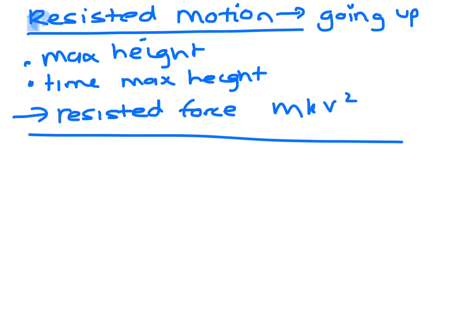We're going to look at resistant motion, where the particle is going up. So that's plus, that's minus. The weight is mg, and the resistance force is mkv squared, so it's actually proportional to v squared, not to v.